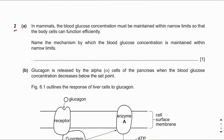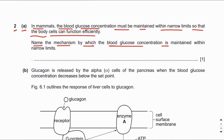Let's move on to question number two, part A. In mammals, the blood glucose concentration must be maintained within narrow limits so that the body can function efficiently. Name the mechanism by which the blood glucose concentration is maintained within narrow limits. We all know that in our body homeostasis is going on.